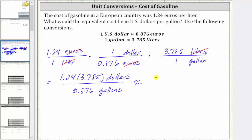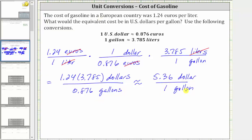This means the rate is $5.36. To make this a fraction, the denominator would be one, and the units are gallons — or we could just say per gallon. So the unit rate is $5.36 per one gallon, or the equivalent cost is $5.36 per gallon.